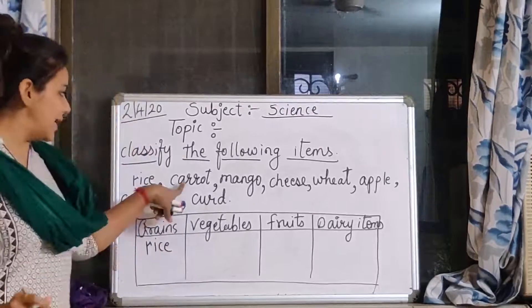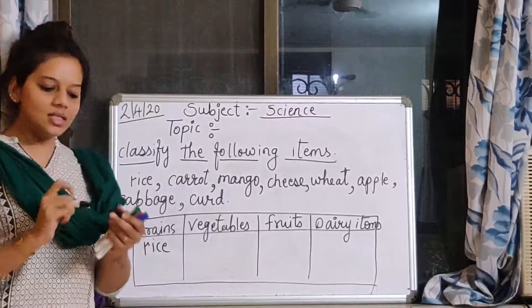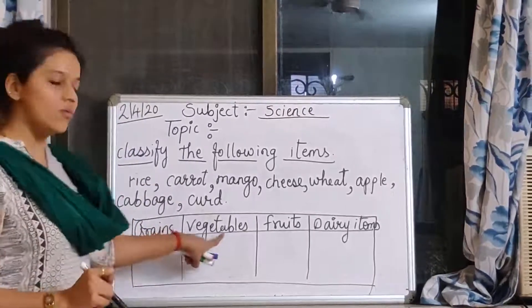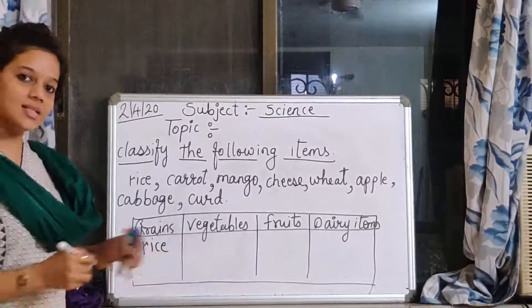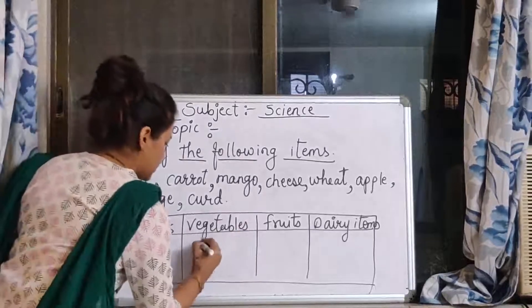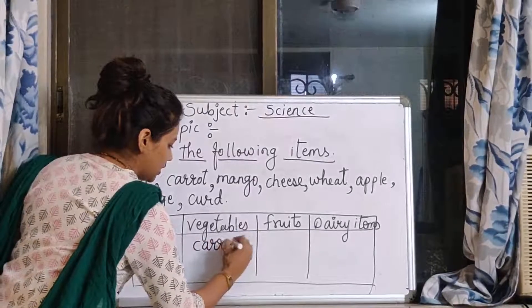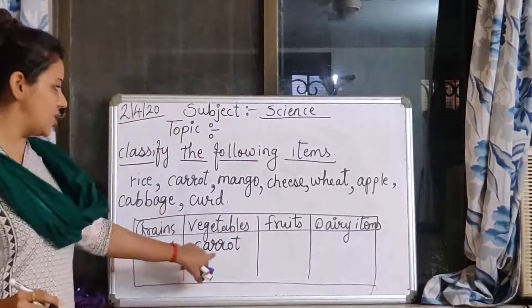Now the second is carrot. Carrot is what? Grains, vegetables, fruits or dairy items? Correct. Carrot is vegetable. So carrot we will put it here. We have to classify vegetable.